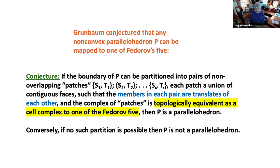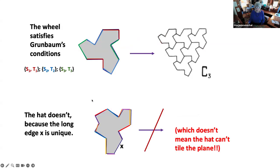So for example, how does it work? The wheel satisfies his conditions — we have the boundary marked in colors: blue and a translate of that, green and a translate of that, red and the translate of that. As a cell complex, you have six edges; it's hexagonal and that's one of the two-dimensional parallelogram lattices. This does in fact tile the plane — we know that was Polya's C3. So it satisfies the conditions.